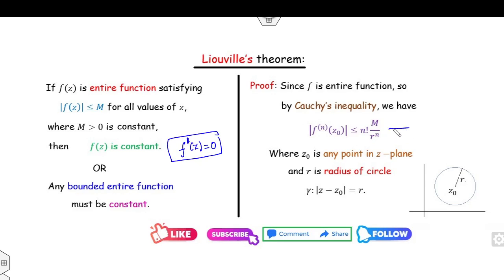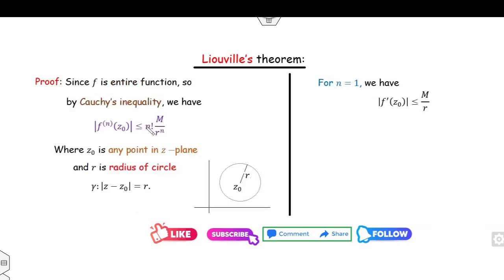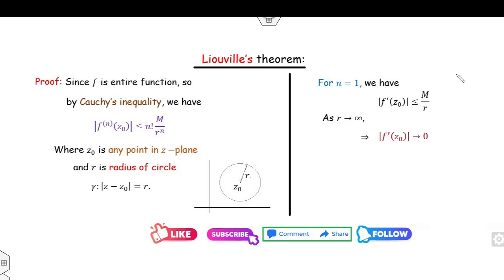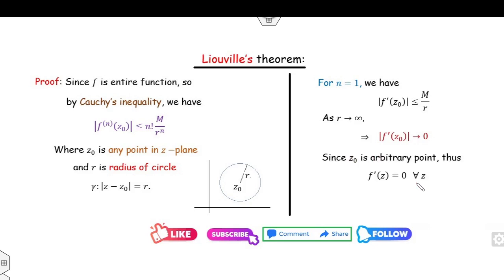Since we need the first derivative, we substitute n=1 in the Cauchy inequality, giving |f'(z₀)| ≤ M/r. Now, since f is entire, the radius of convergence is infinity, which means we can let r approach infinity. As r→∞, the right-hand side M/r goes to 0. Therefore |f'(z₀)| = 0, meaning f'(z₀) = 0. Since z₀ is an arbitrary point in the complex plane, the first derivative is zero everywhere, which means the function is constant. That completes the proof.